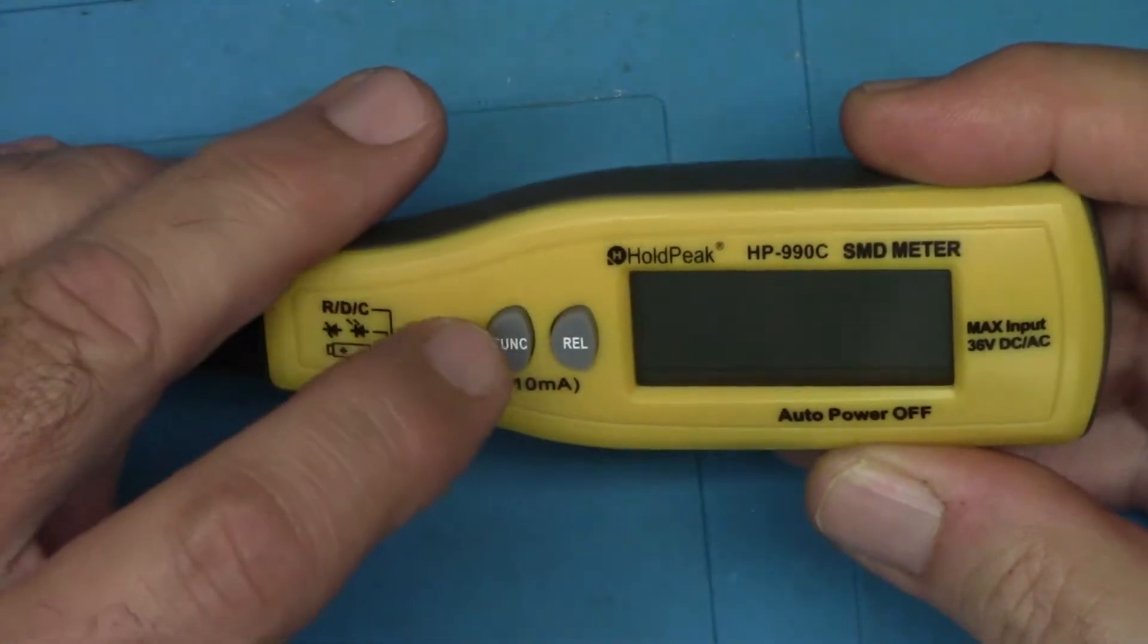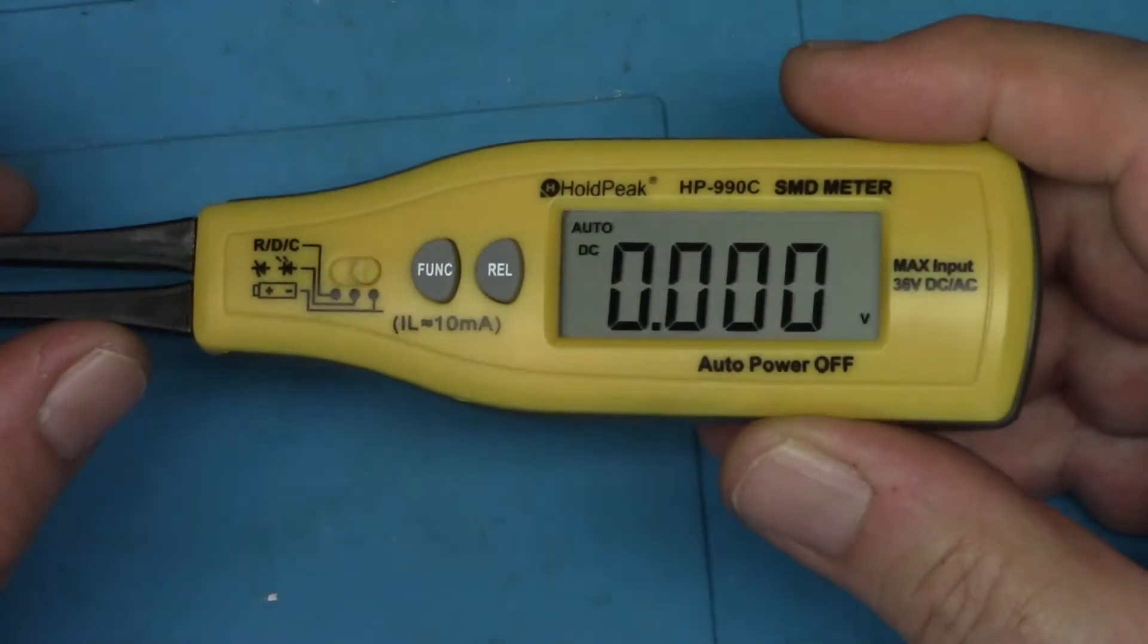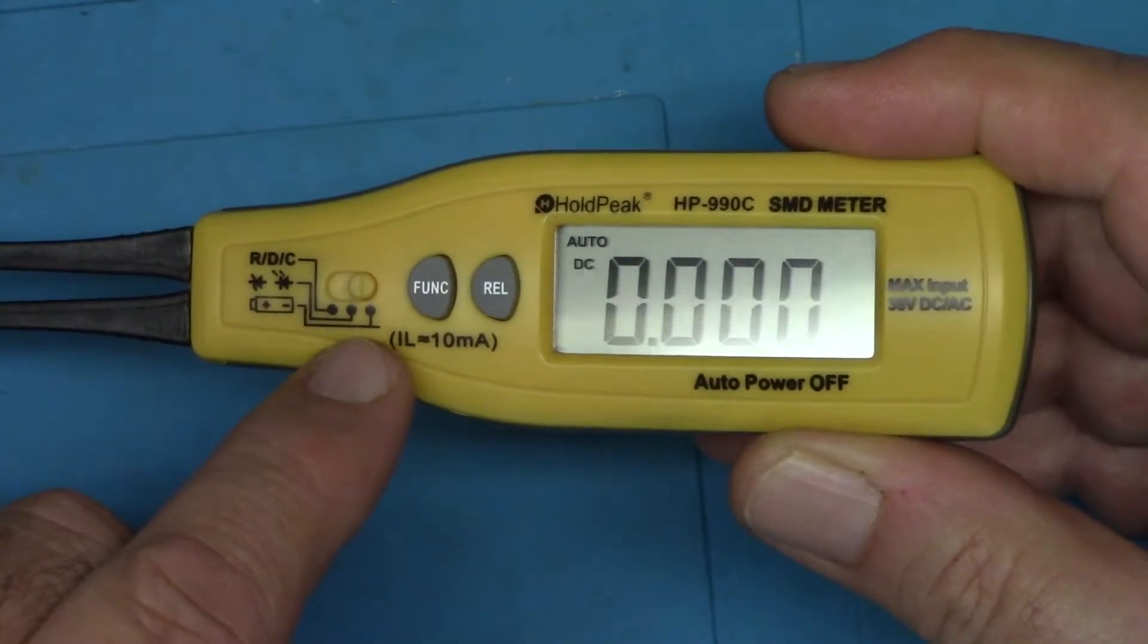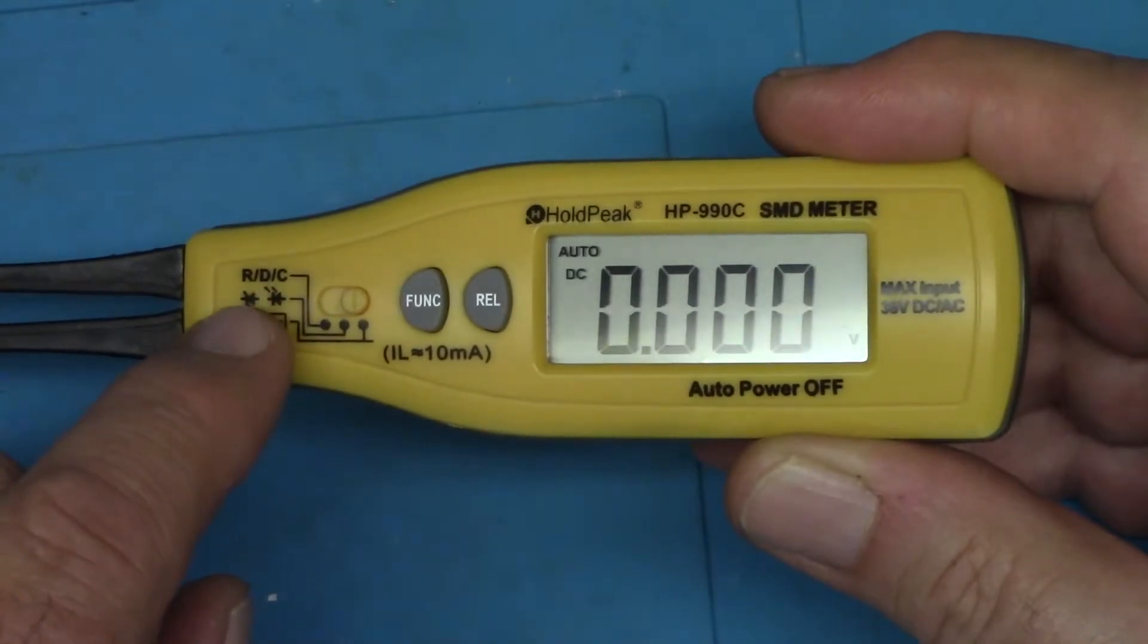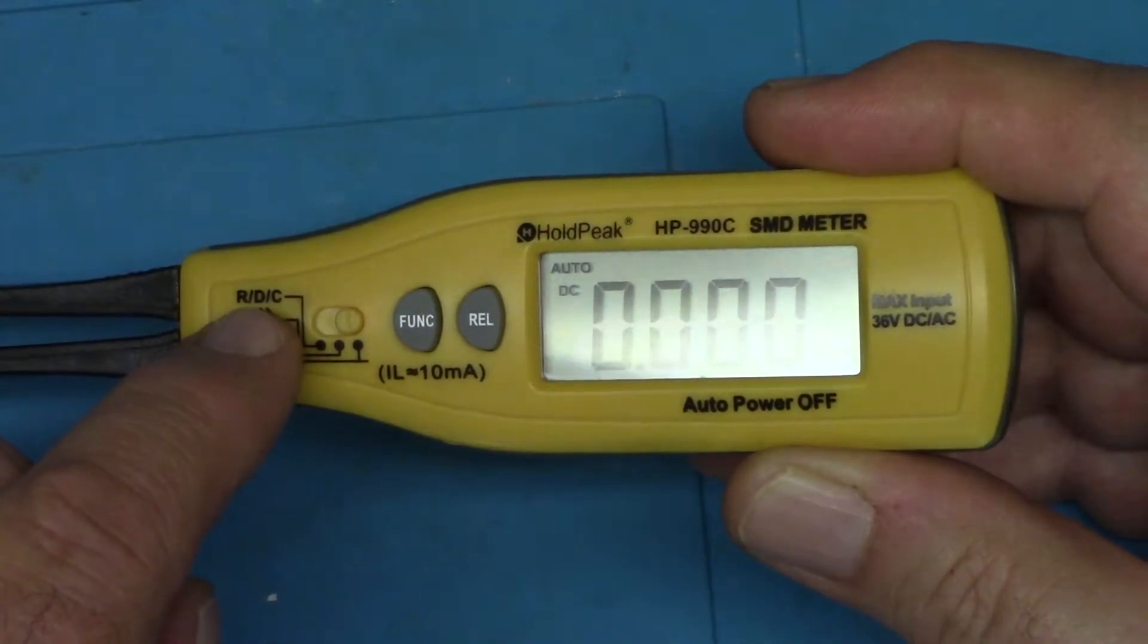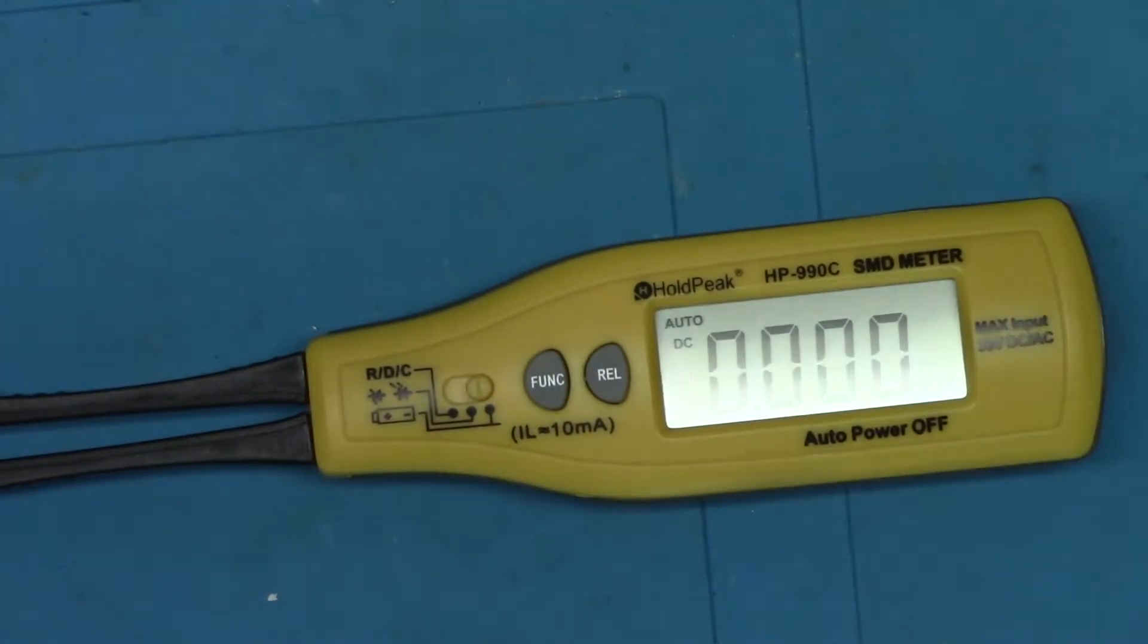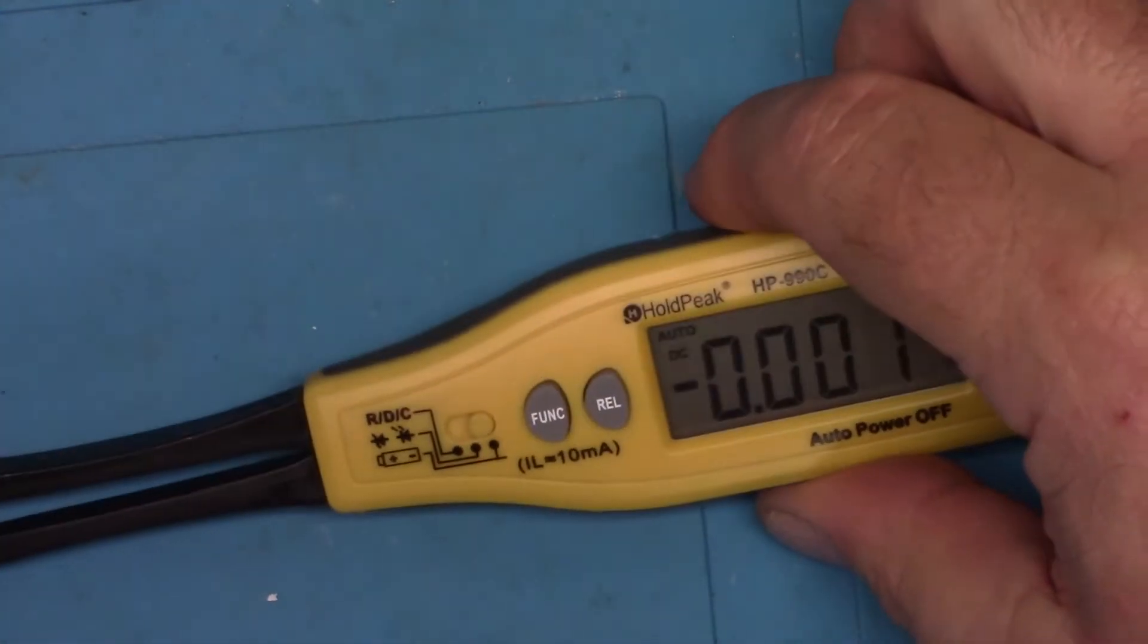I've already put batteries in it, so you hit the function button to turn it on. As you can see it's already set in DC voltage mode according to the diagram. The little battery picture - the center function on this slider switch is the Zener diode check, and then all the way to the left gives us resistance, diode check, and capacitance checks, also continuity. Let me turn on the power supply and hook up our leads to this.